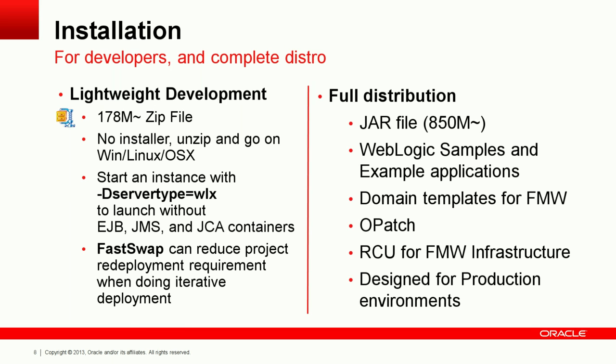For the production environment, customers and users must use the full distribution file. The file is around 150 megabytes due to several content items provided in the installation, such as sample and example applications, domain templates for Oracle Fusion Middleware, the Oracle OPatch installer utility for patching WebLogic, and the RCU for Fusion Middleware infrastructure.